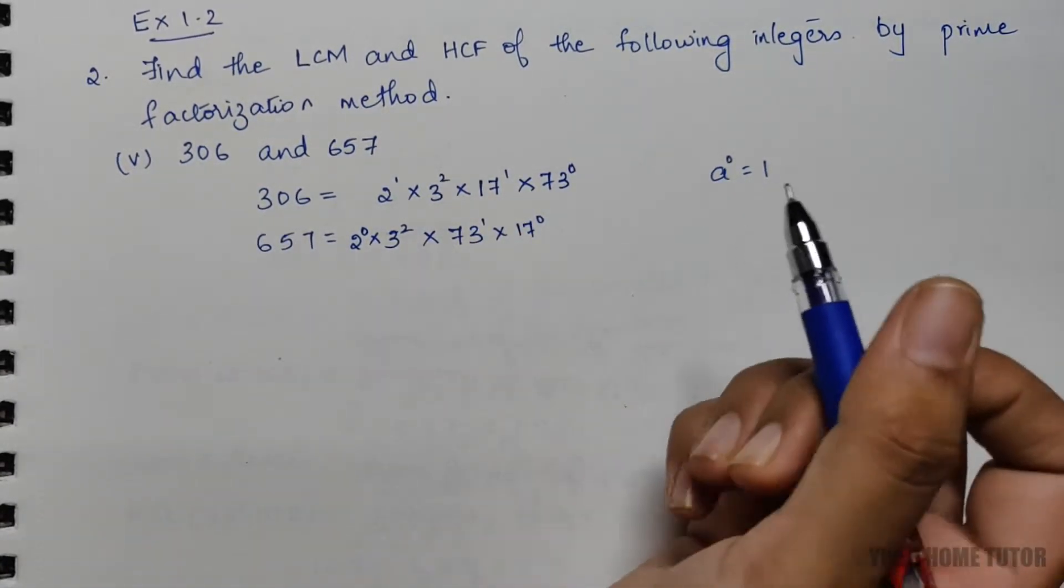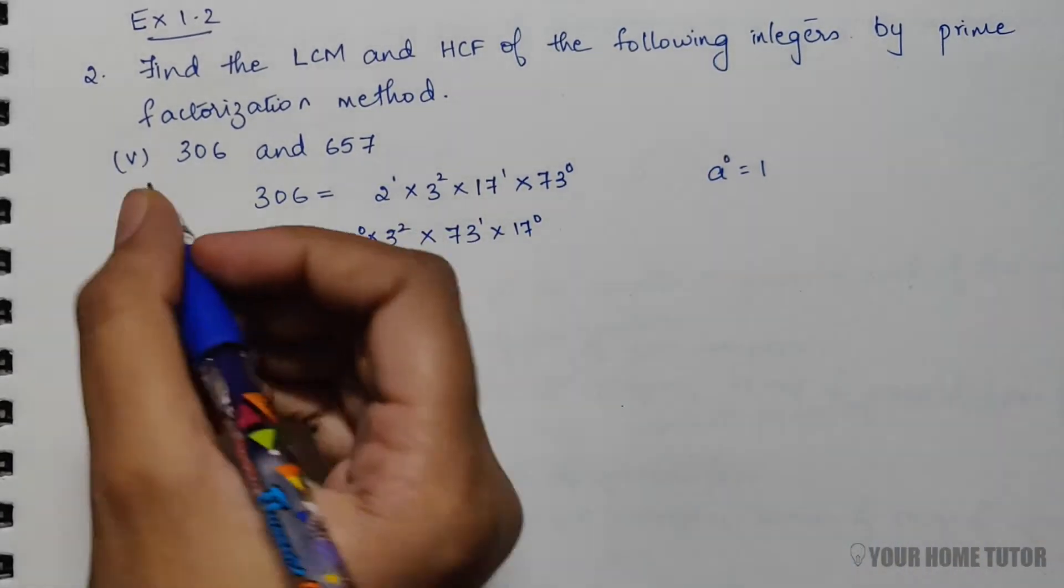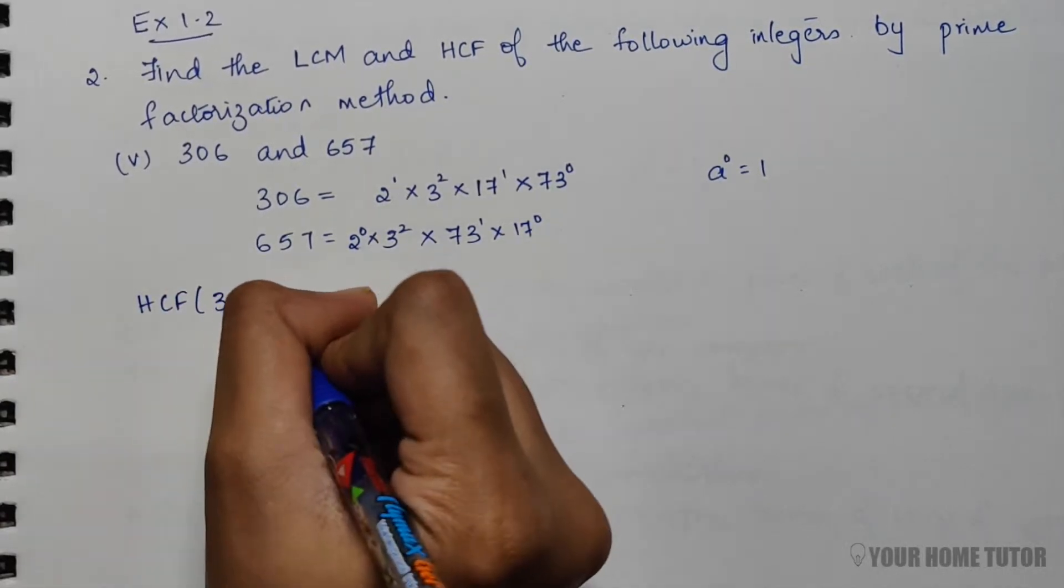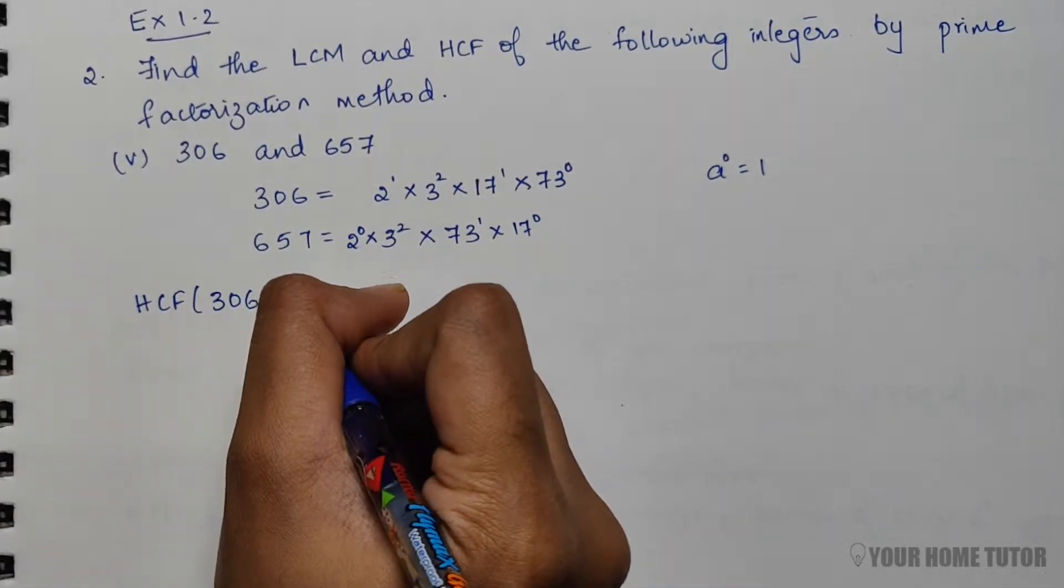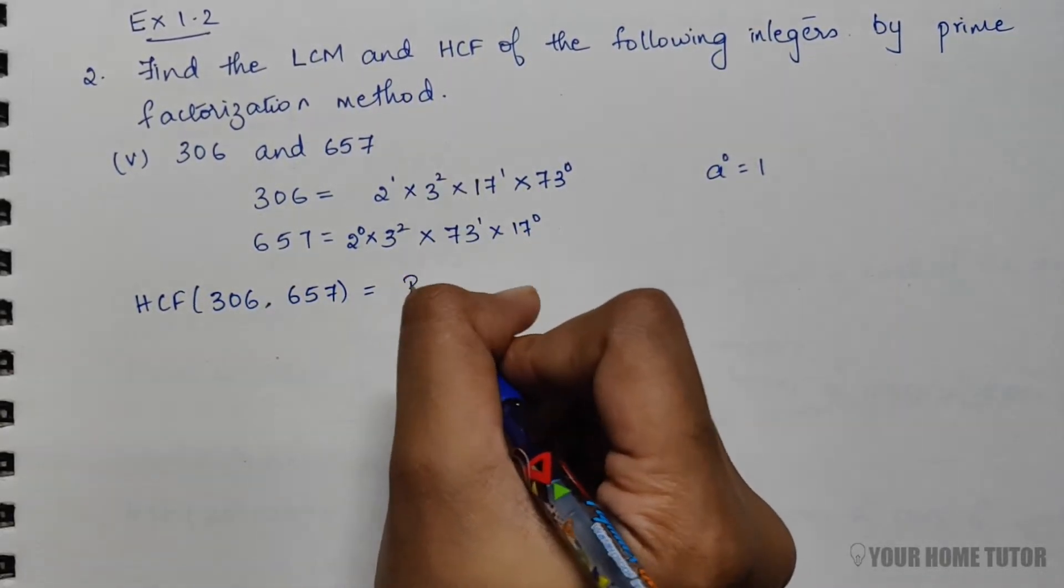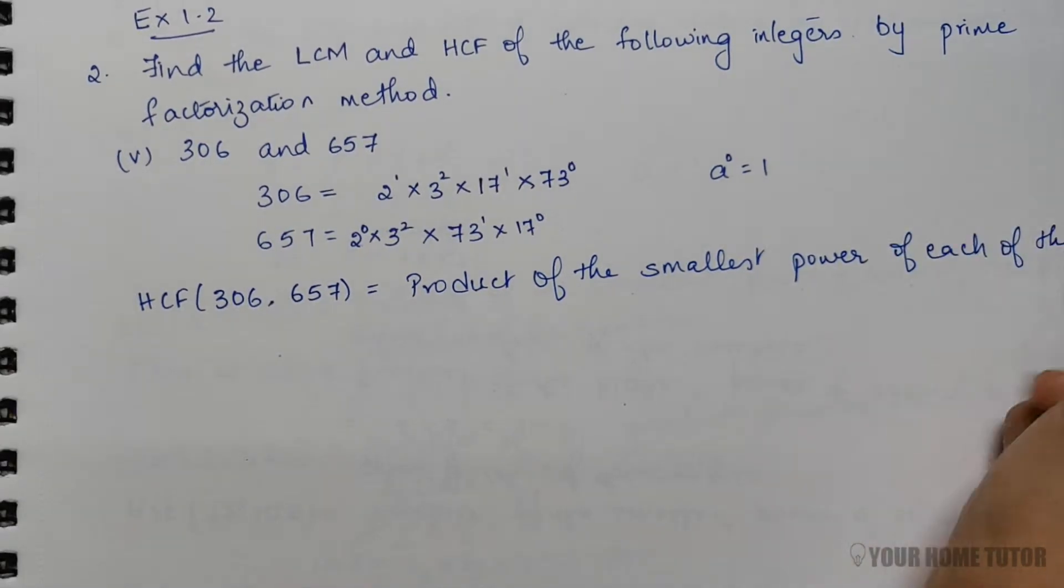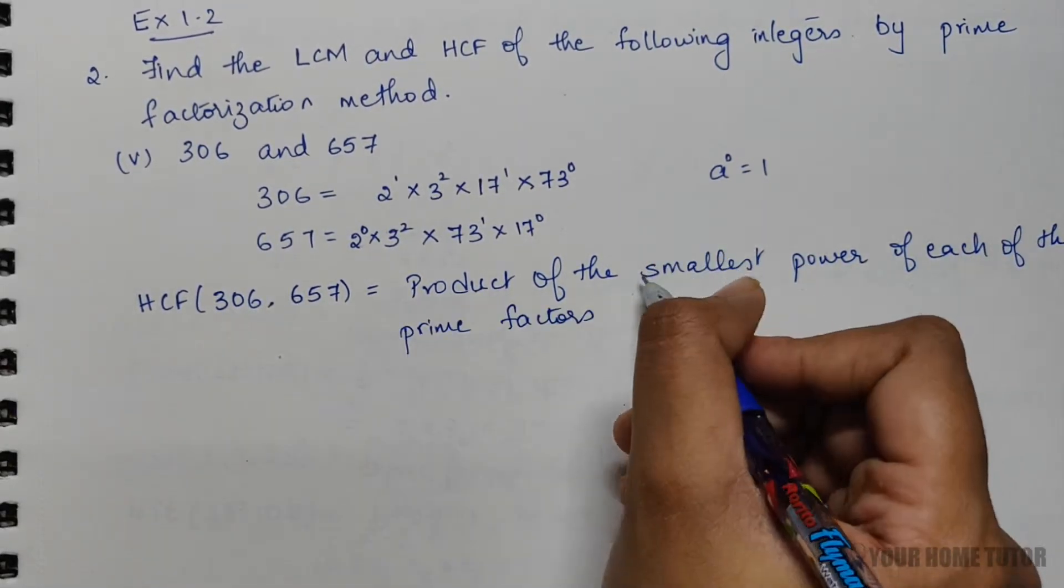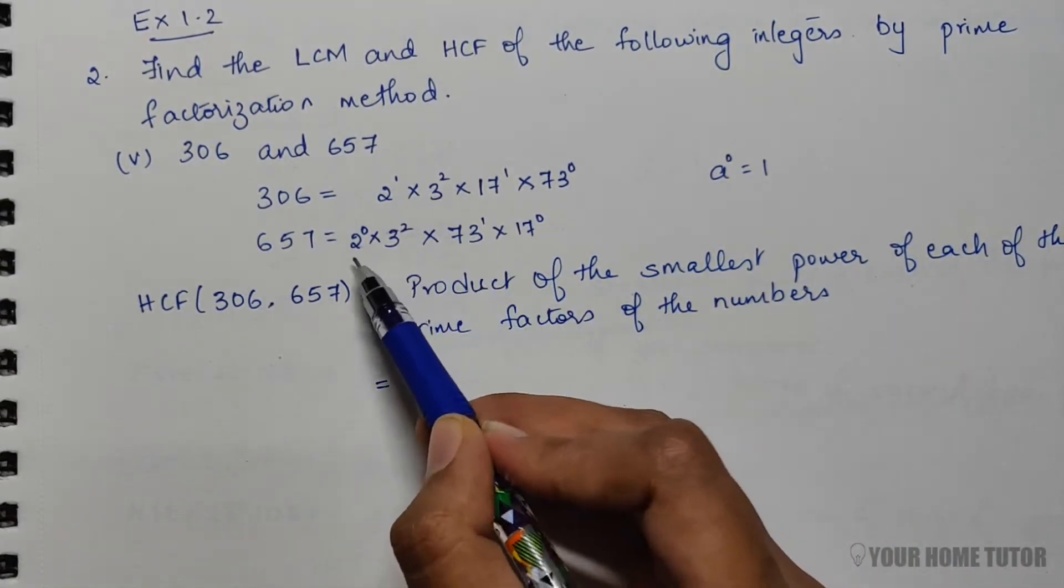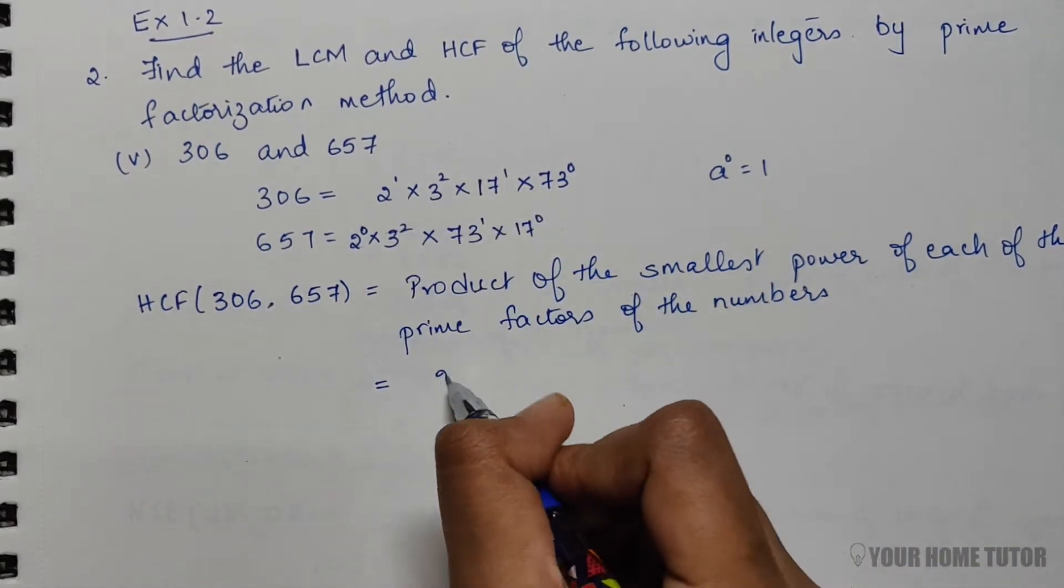Since multiplying by 1 you'll get the numbers directly back again. To find the HCF for 306 and 657, it is nothing but the product of the smallest power of each of the prime factors of the numbers. So that is equal to the product of the smallest power of 2, which is 2^0.